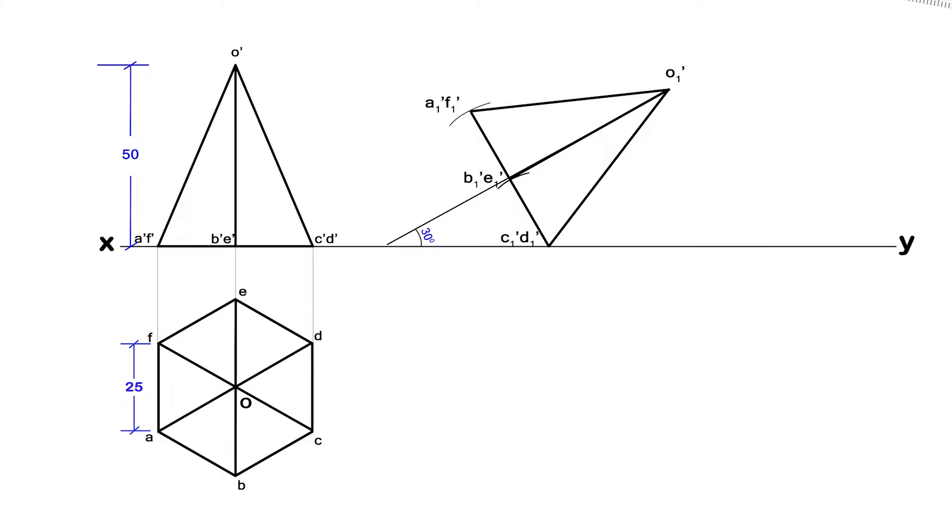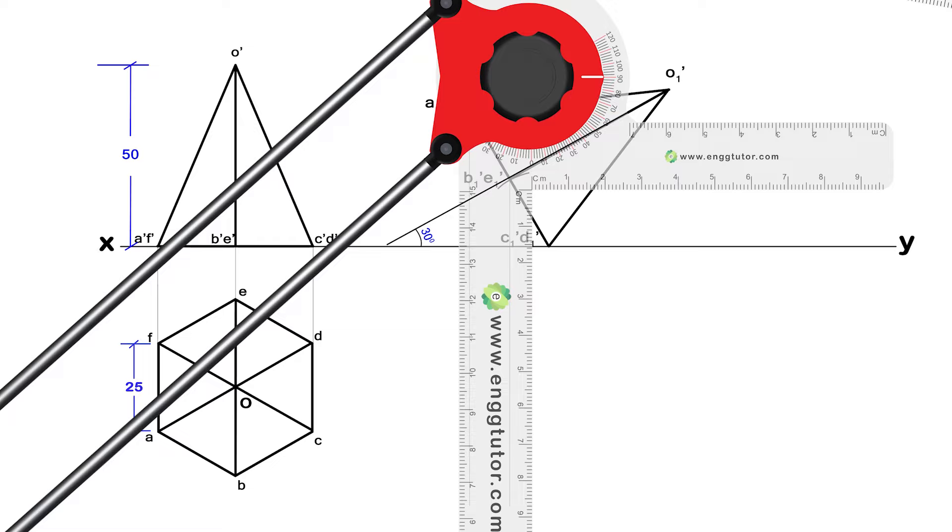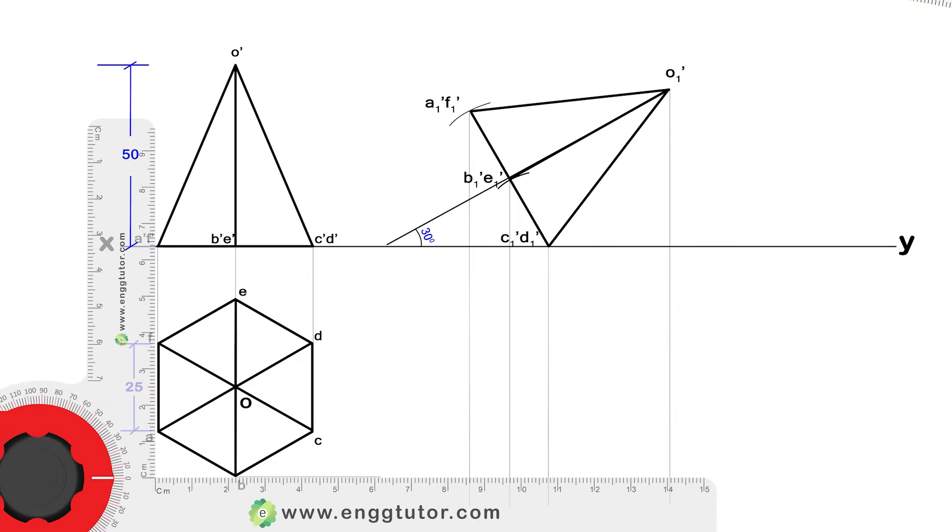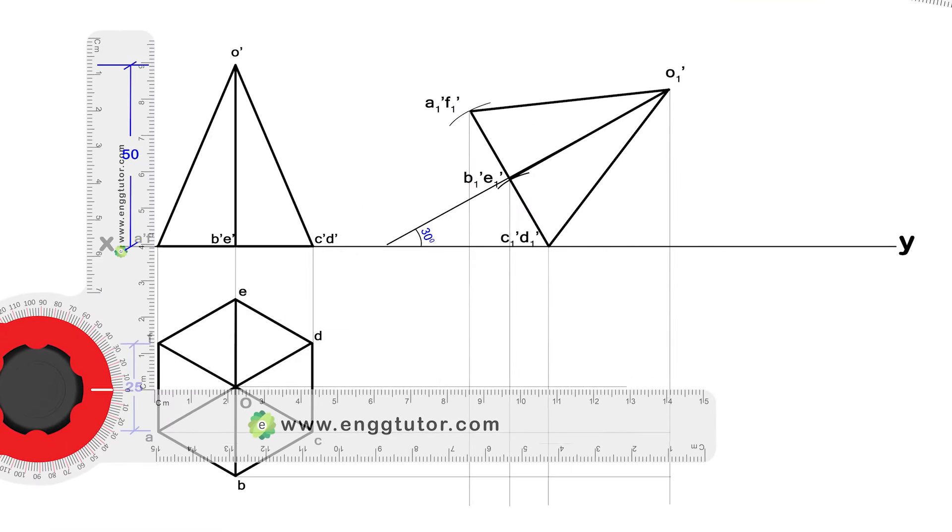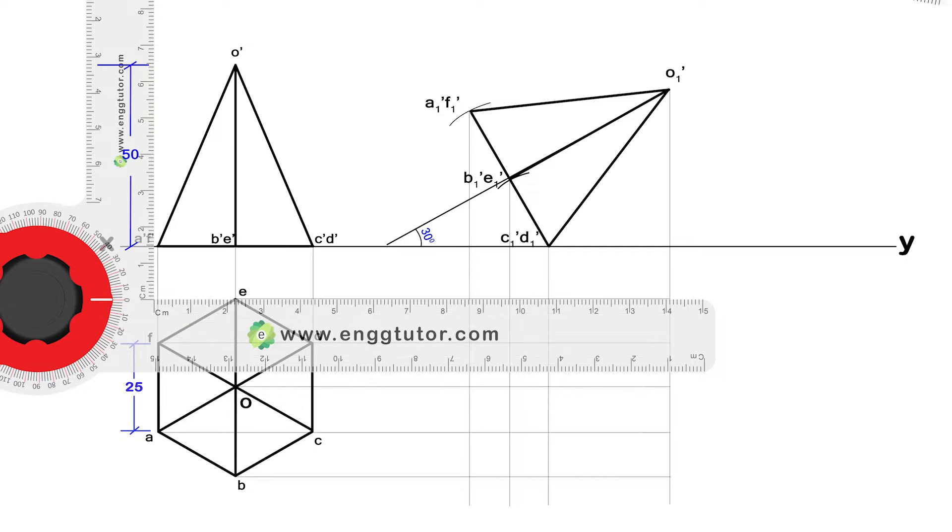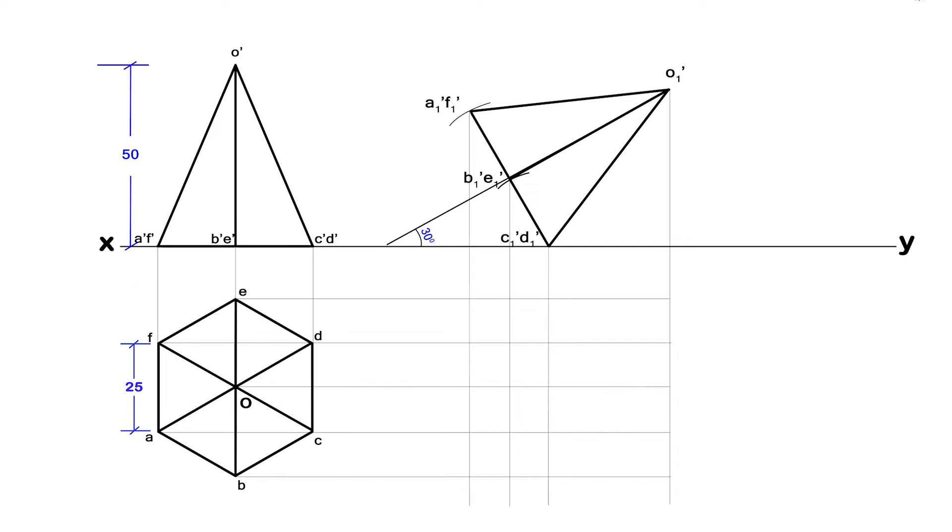To draw the final top view, draw the projections from every corner point of the front view, and draw the locus from the first top view to get the intersection points. Name the intersection points.